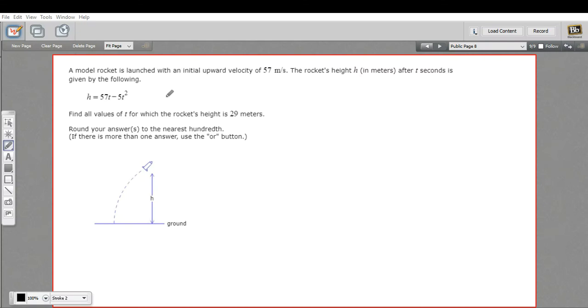Here we have a word problem that has to do with a quadratic equation. It says a model rocket is launched with an initial upward velocity of 57 meters per second. The rocket's height in meters after t seconds is given by the following equation: h equals 57t minus 5t squared.